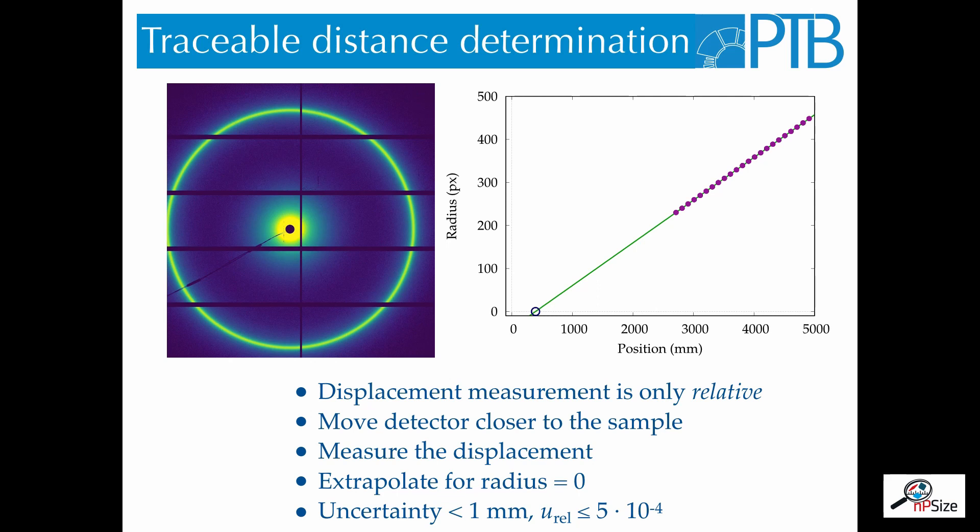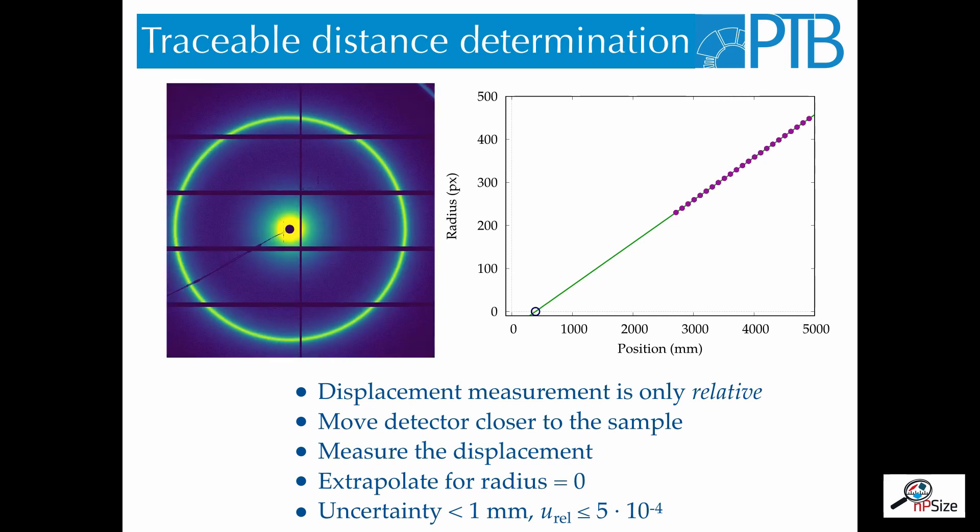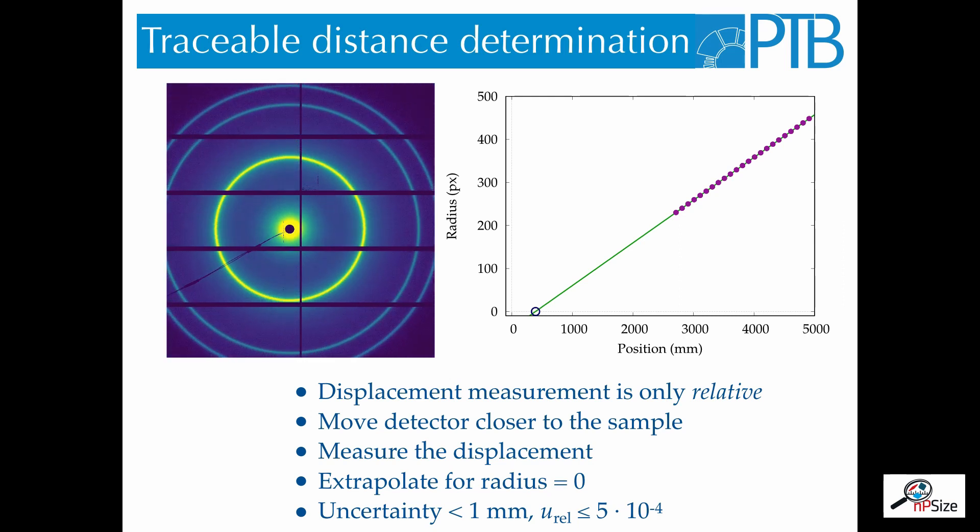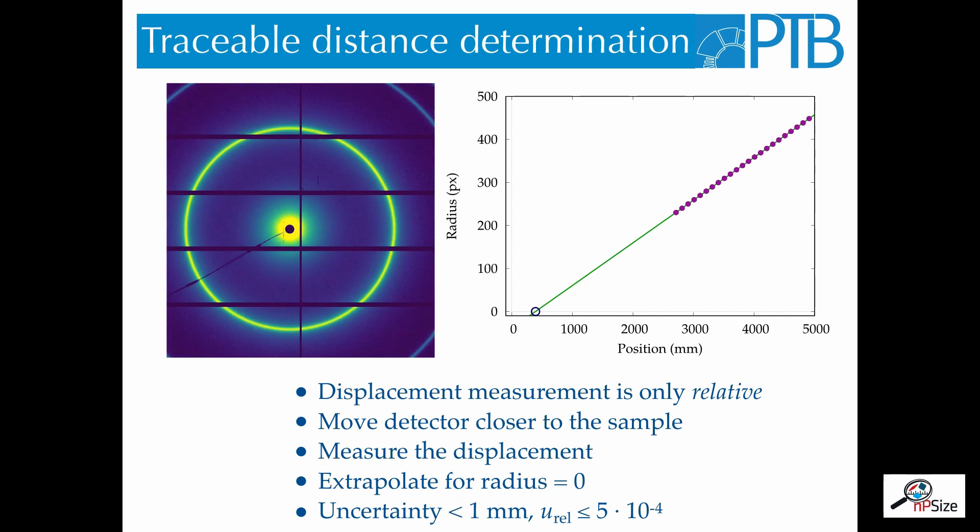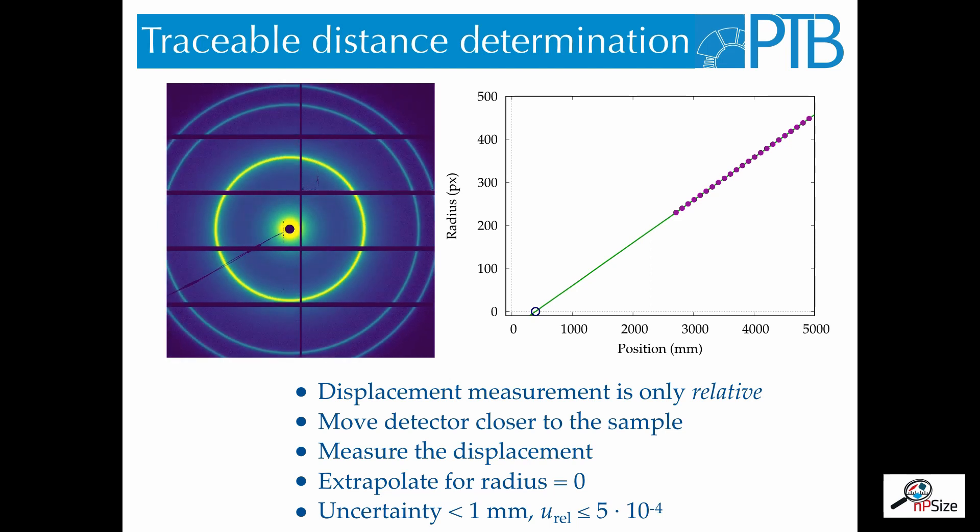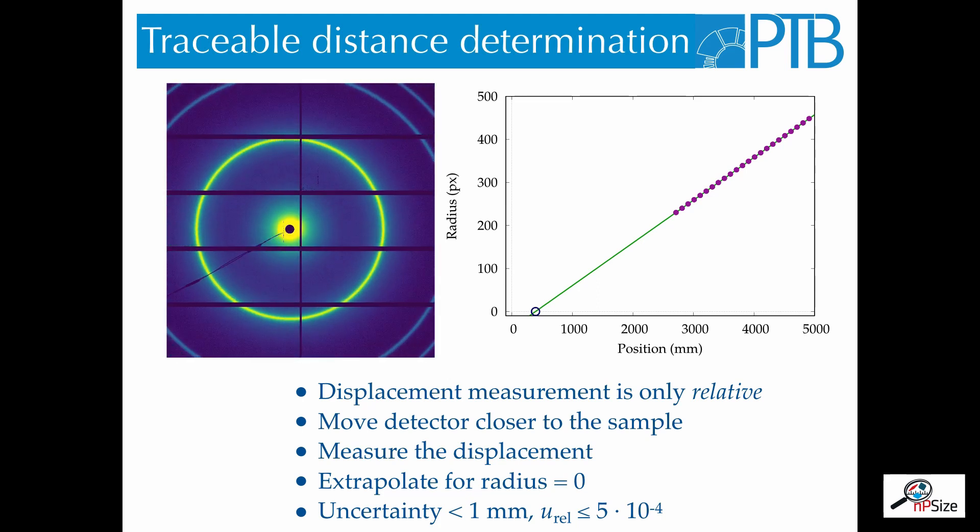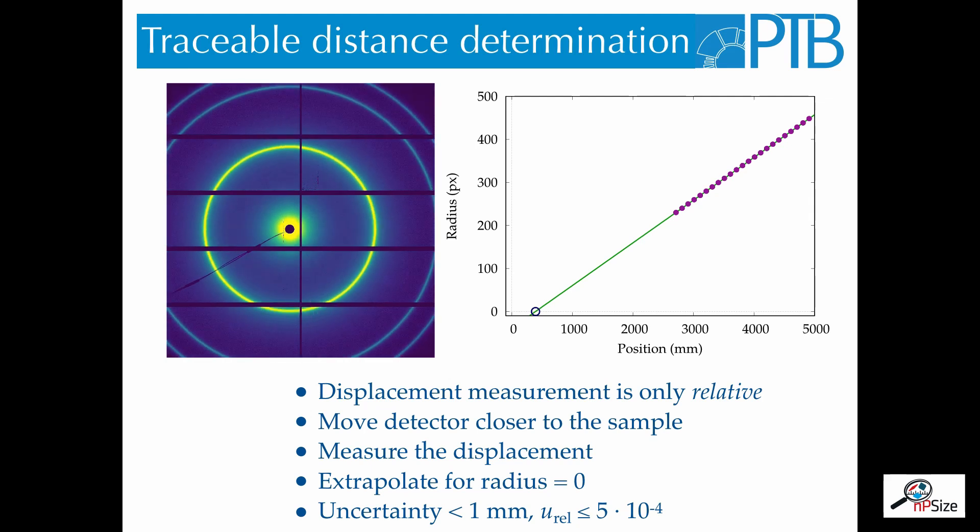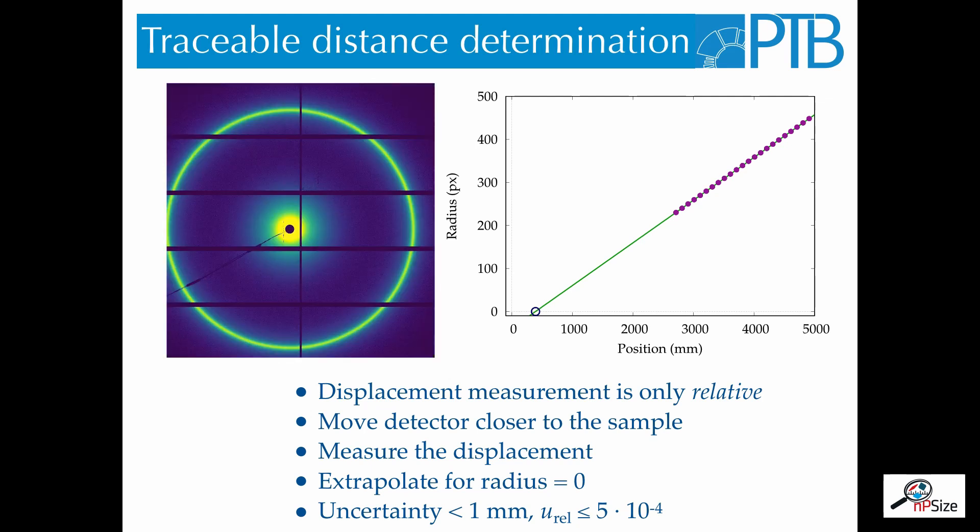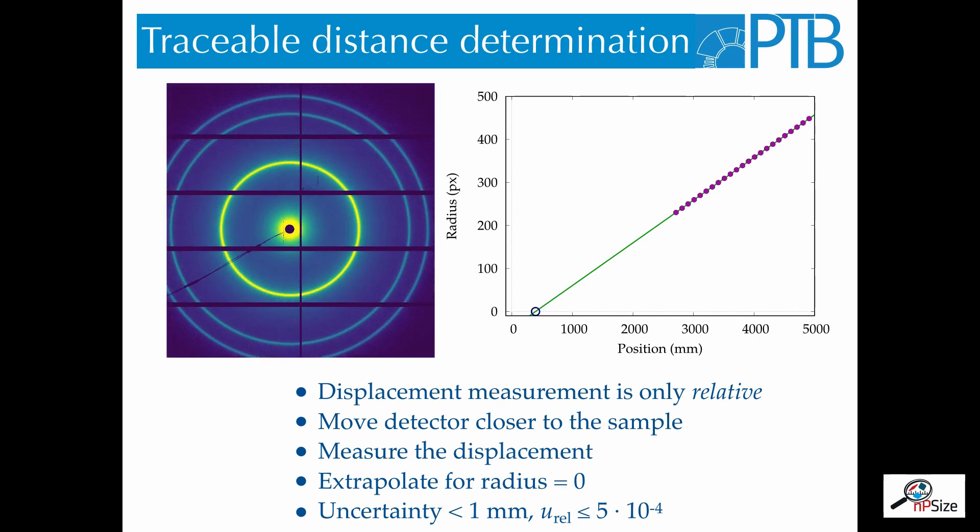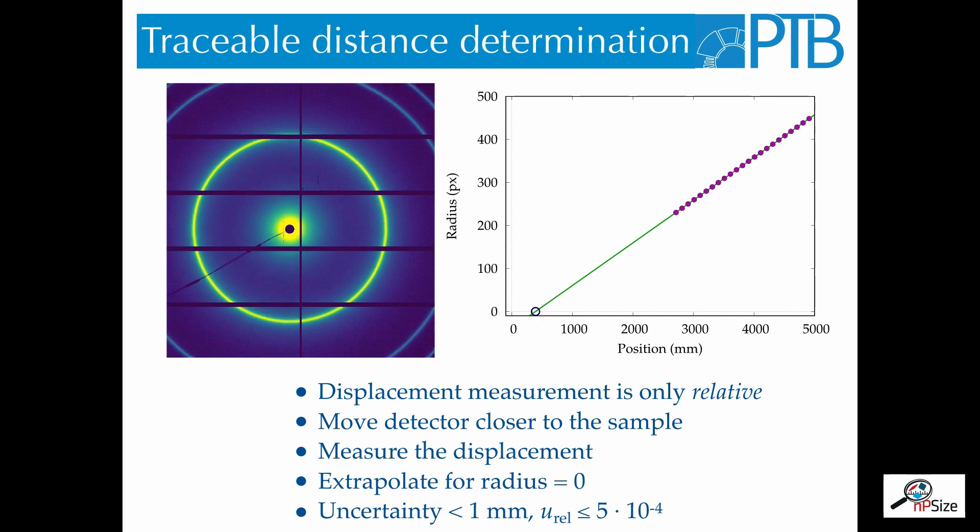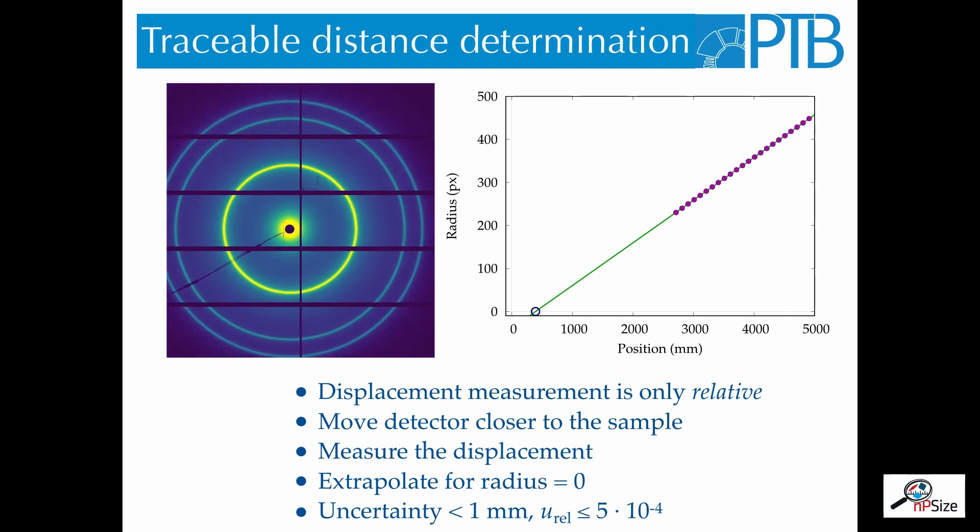On the left-hand side, you see the scattering pattern of a standard sample, which has a very pronounced ring. We then move the detector closer to the sample, therefore the ring shrinks, changes its size. And when we measure the radius of the ring and the displacement of the detector, we can compute the absolute position. On the right-hand side, you see the radius of this ring versus the position of the detector. And by fitting a straight line through these positions and extrapolating to the position where the radius would be zero, we get the total distance between detector and sample with an uncertainty less than one millimeter, which is a relative uncertainty of 5 times 10 to the minus 4.